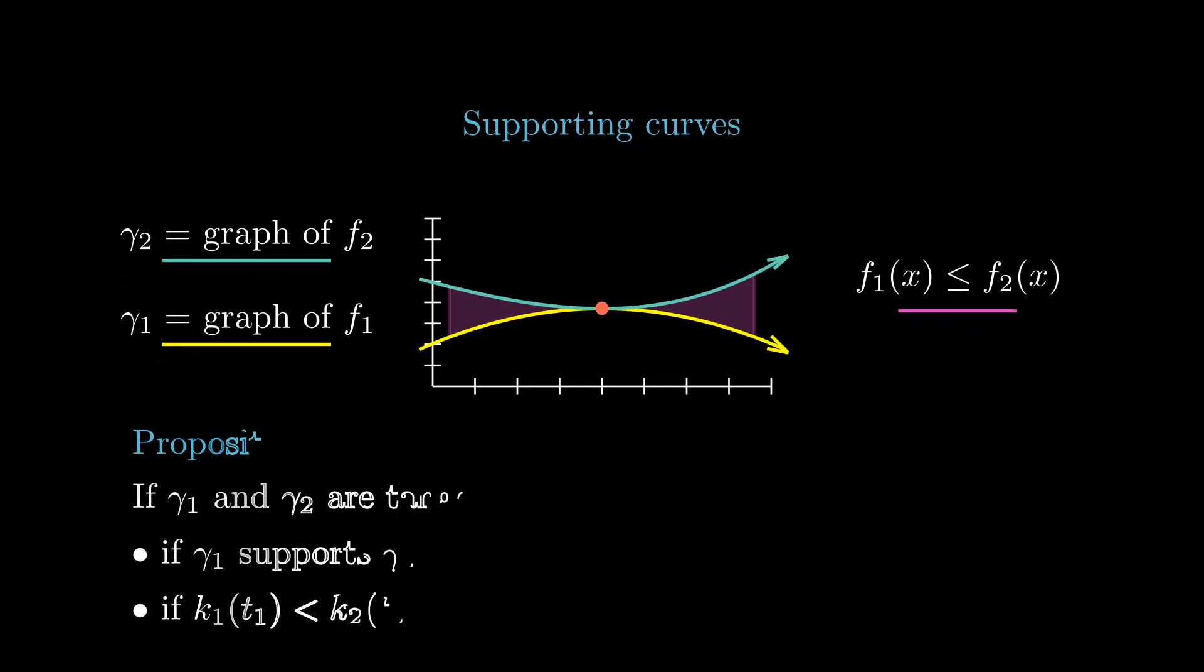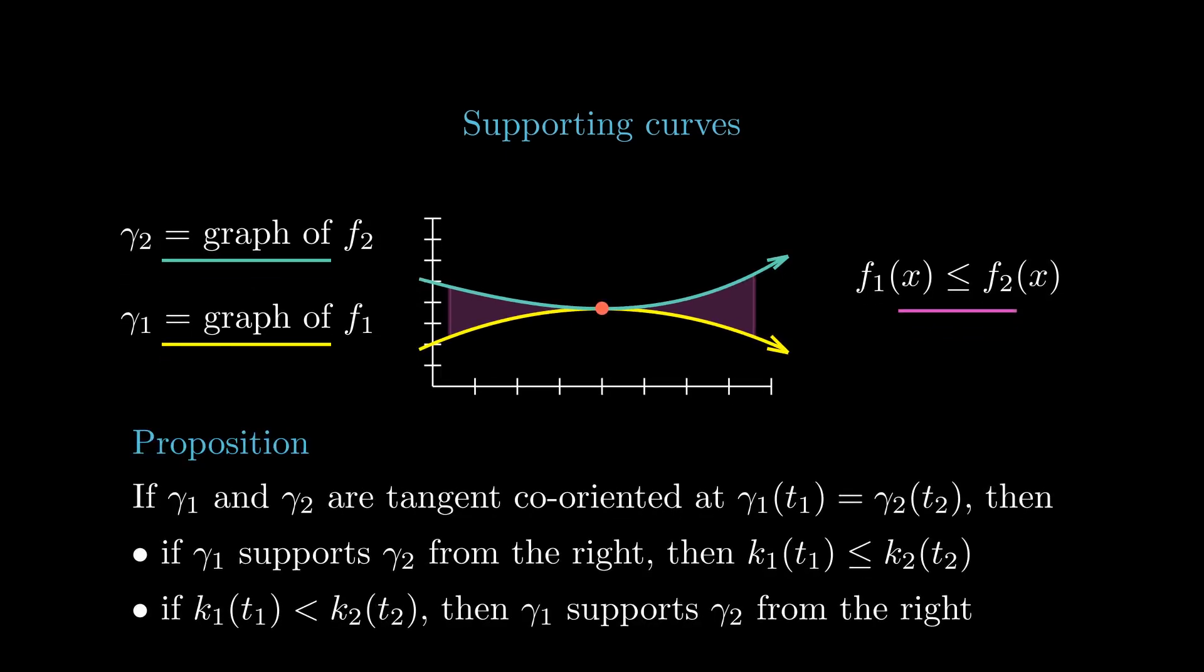It turns out there is a second derivative test to see if, given two tangent planar curves, one curve supports the other or not. If gamma1 and gamma2 are tangent and co-oriented at times t1 and t2 respectively,